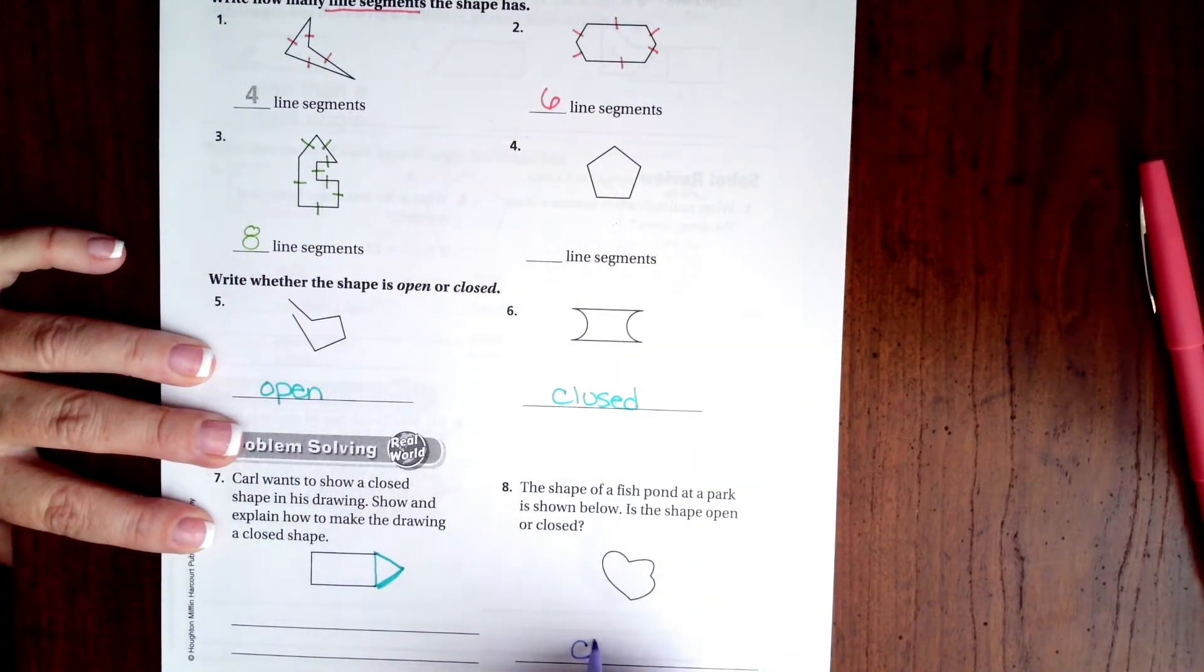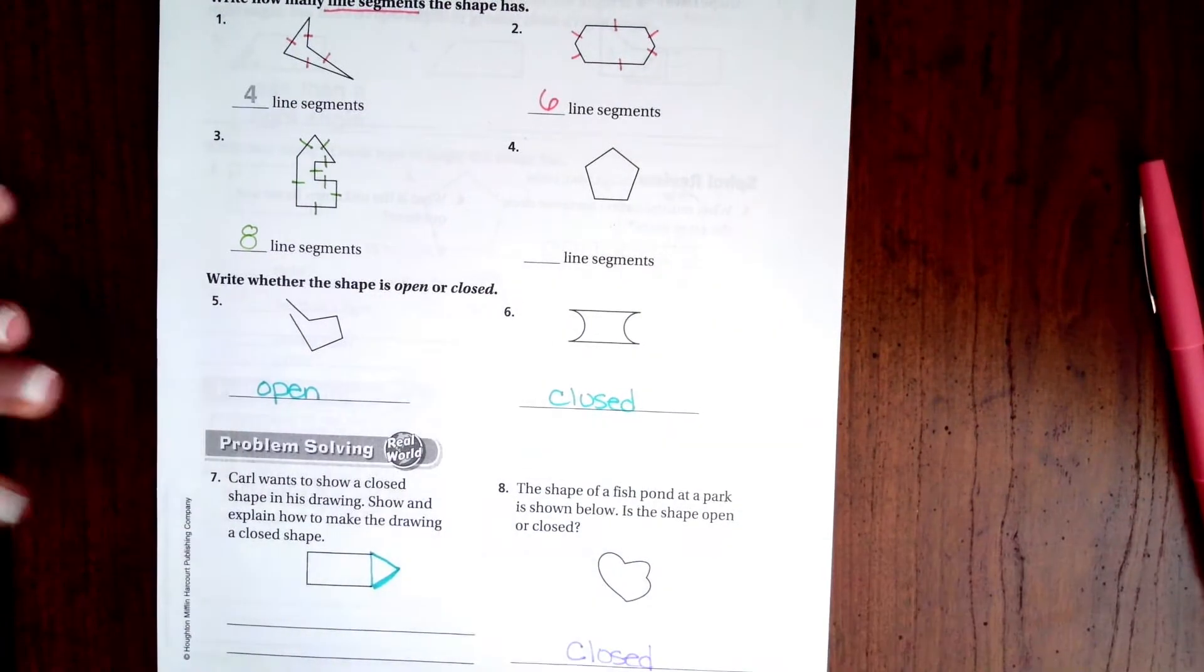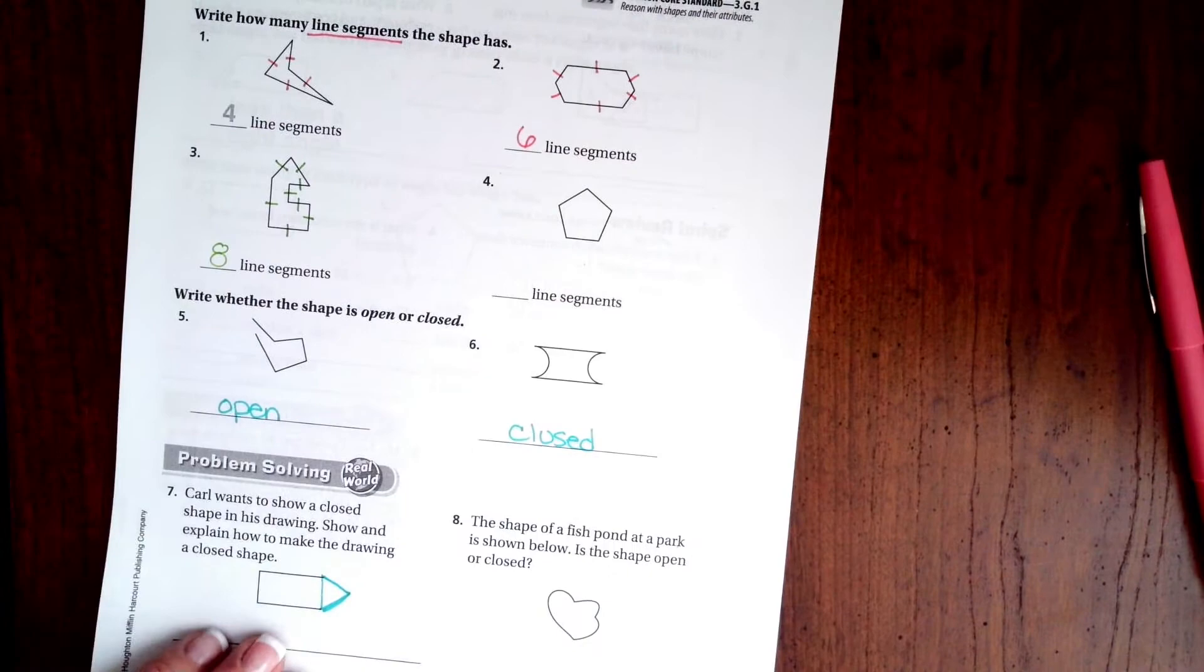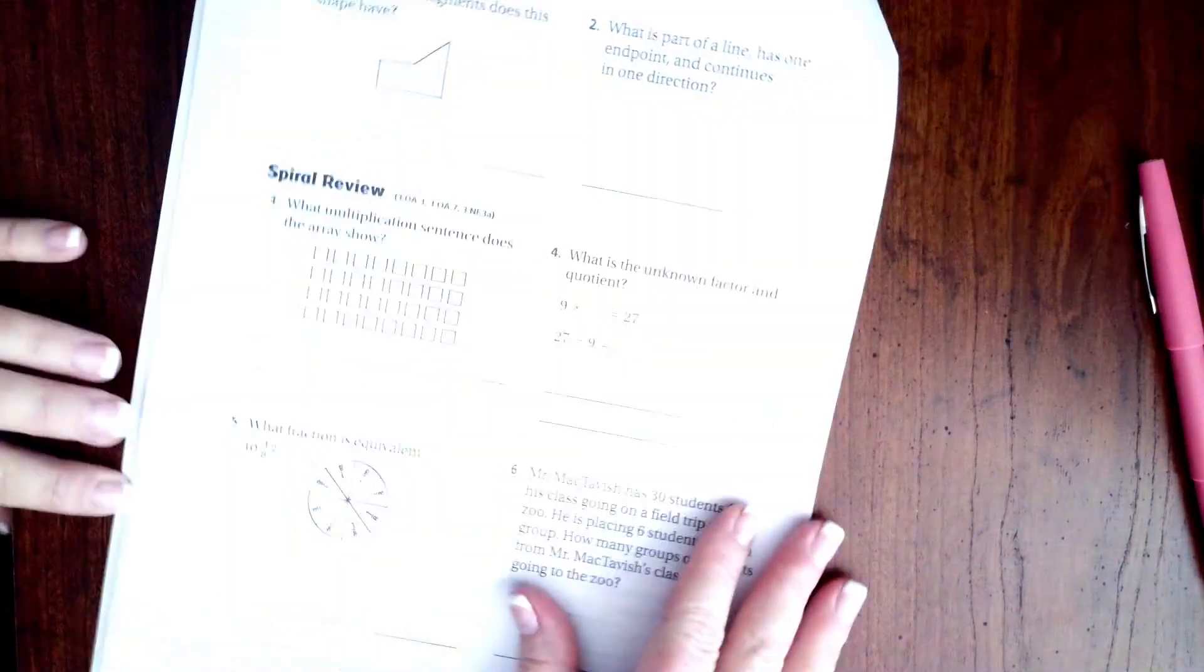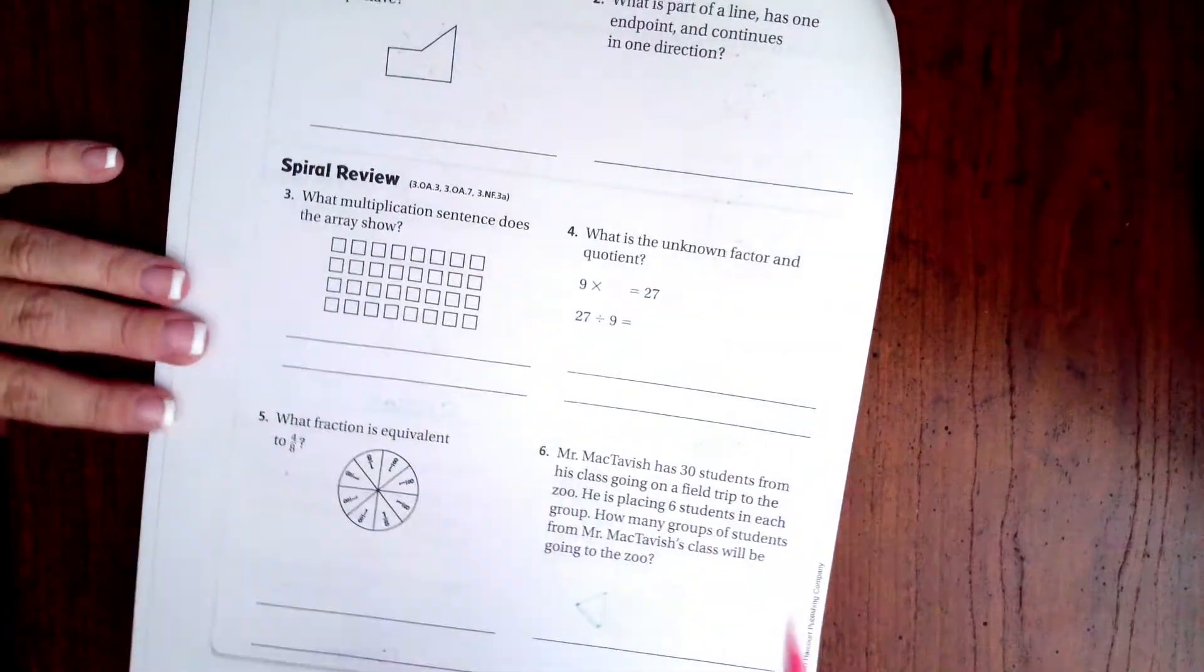All right, we're going to go over on to the back where you guys are going to do the lesson check just like always, and we're going to go down and do the spiral review.